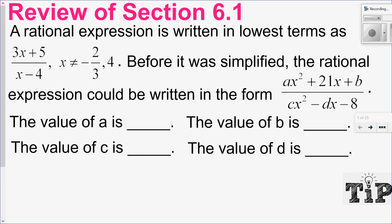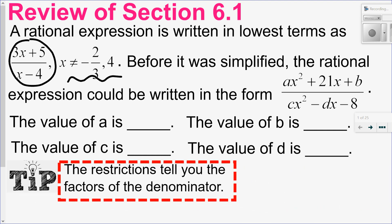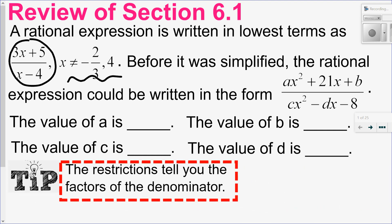In this first question, I'm given a rational expression that has been written in lowest terms — in essence, this is the answer to a question with these restrictions. I want to know what it was before it was simplified. A little tip: examine the non-permissible values. The restrictions tell you the factors of the denominator because we cannot divide by 0. So if I have a restriction that x cannot equal negative 2 thirds, that means my non-permissible value is negative 2 thirds. Let's use that to find the factor.